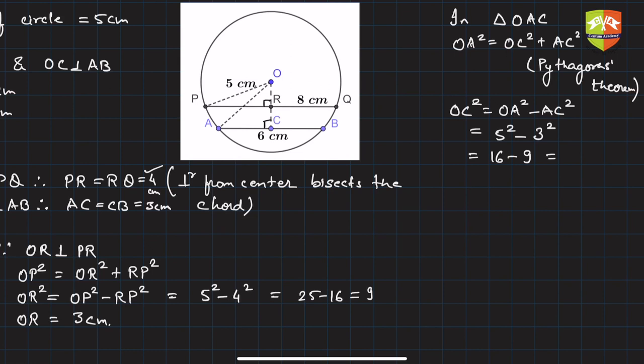I'm sorry, 25 minus 9, not 16. So 25 minus 9, which is 16. Hence OC is 4 centimeters. Now what is RC? Clearly RC is OC minus OR. OC is 4 and OR is 3, so it is 1 centimeter.